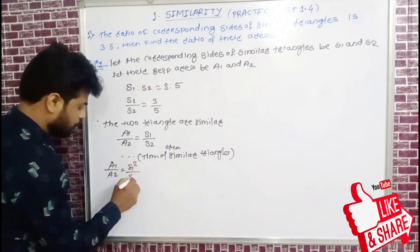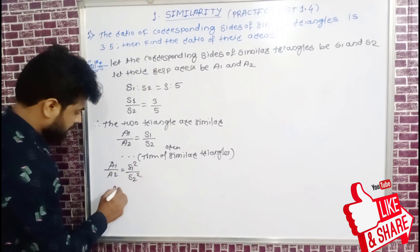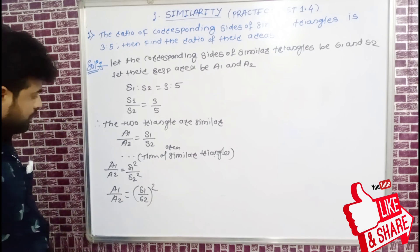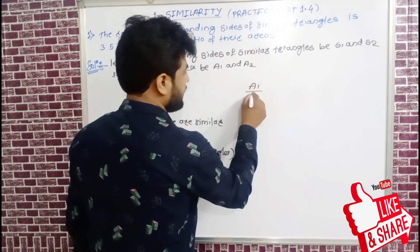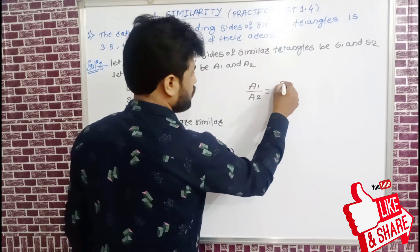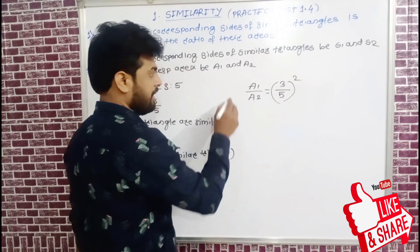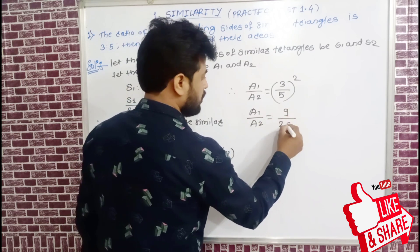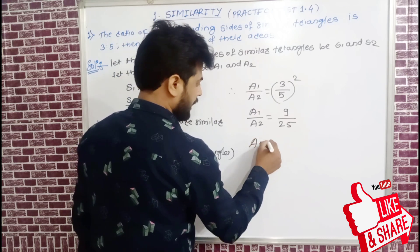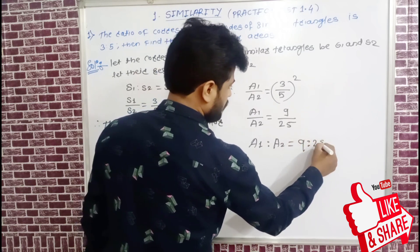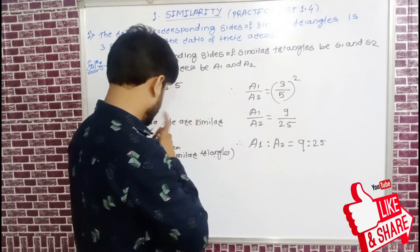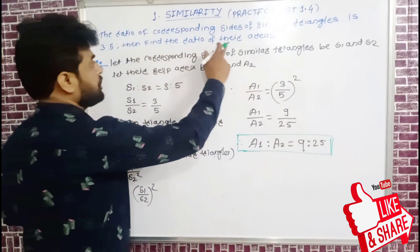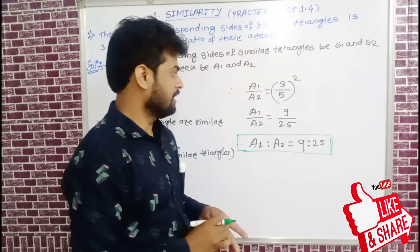So a1 upon a2 equal to s1 square upon s2 square. After squaring, 3 squared is 9 and 5 squared is 25. Therefore the ratio a1 to a2 equals 9 ratio 25.